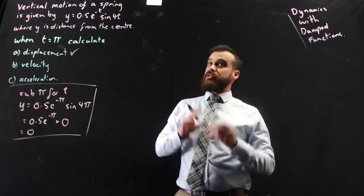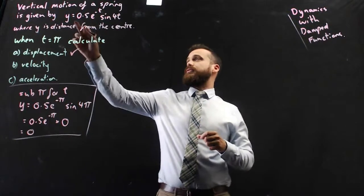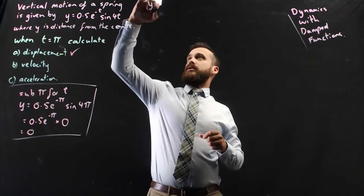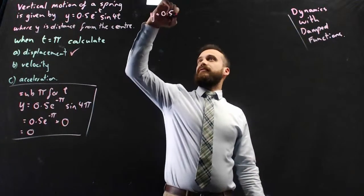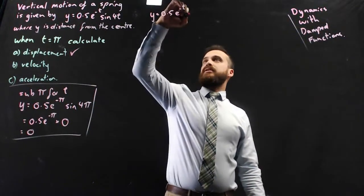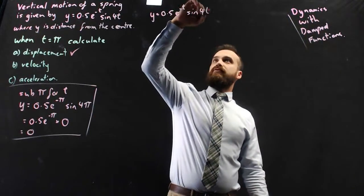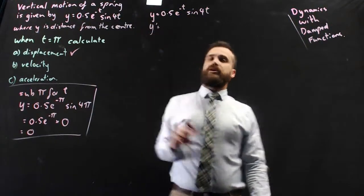The second question, velocity, that's going to be harder because we've got to find the derivative of this. So if y equals 0.5e to the negative t sine 4t, what does y dash equal?